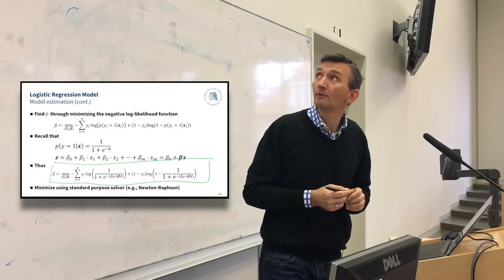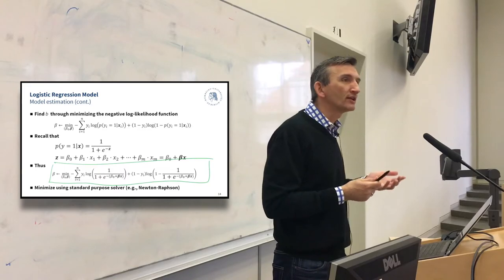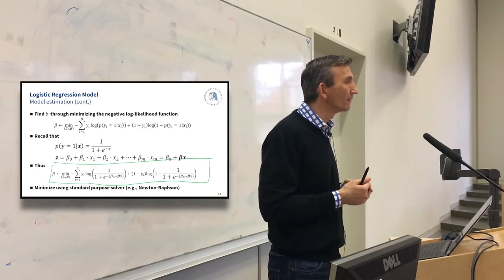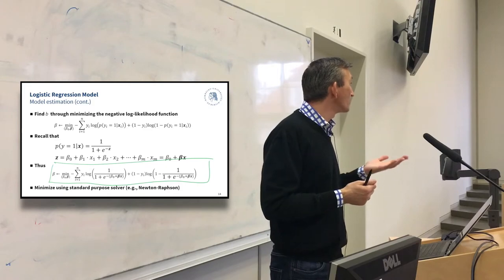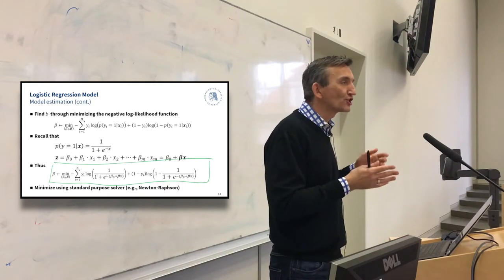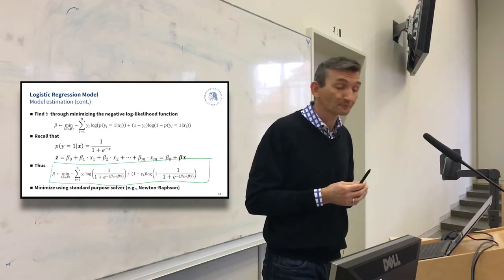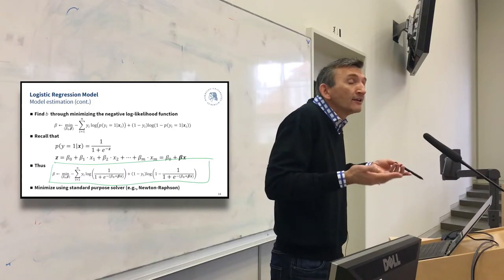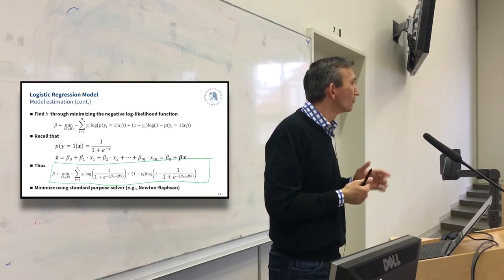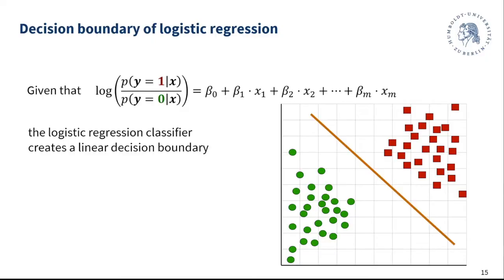This is a standard nonlinear optimization problem. You can call the negative log-likelihood a cost function or, in statistics, a loss function. Algorithms like Newton-Raphson or Adam can find the optimal beta values for your training dataset. As a matter of fact, logistic regression is a very simple, shallow neural network, so you could also use deep learning solvers. Because we're still carrying out linear regression with a trick, the classification boundary we construct is also a linear function — a hyperplane separating the data.